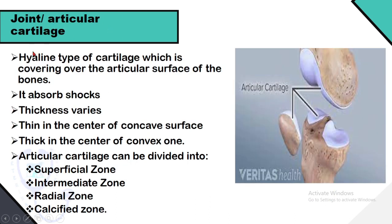Articular cartilage is the hyaline type of cartilage that covers the articular surfaces of the bones. Its function is to absorb shock during mechanical work or locomotion. The thickness of the articular cartilage varies — thin in the center of concave surfaces and thick in the center of convex ones. Articular cartilage can be divided into zones: the superficial zone, intermediate zone, radial zone, and calcified zone. Beneath these zones is the subchondral bone plate, which includes part of the articular cartilage as well as a layer of lamellar bone.